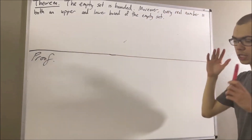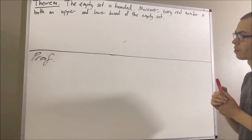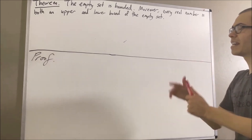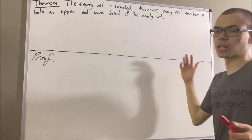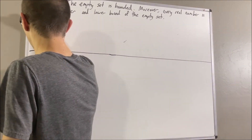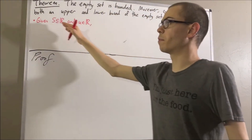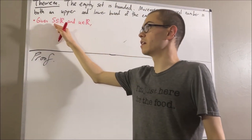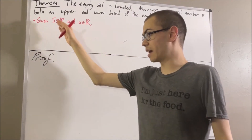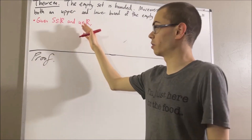Now before we get into the proof, let's get some context. To start, we're going to say that given any subset of real numbers s and a real number u, we say that u is an upper bound of s if, for every element x in s, x is less than or equal to u.